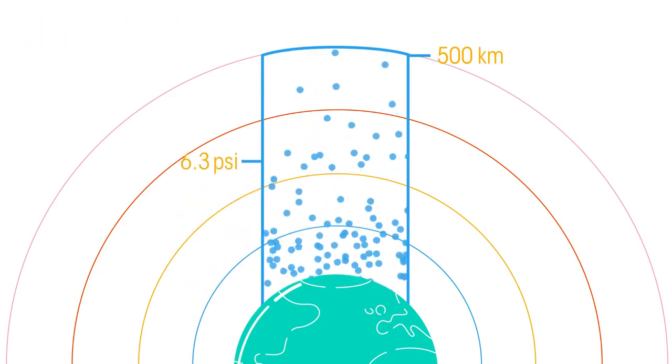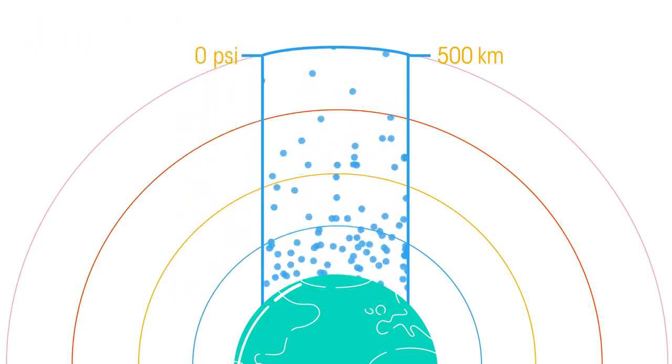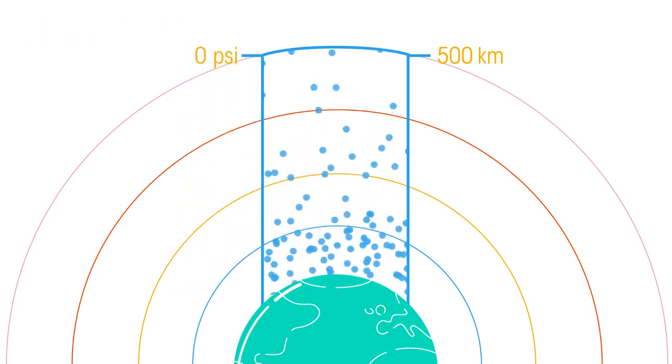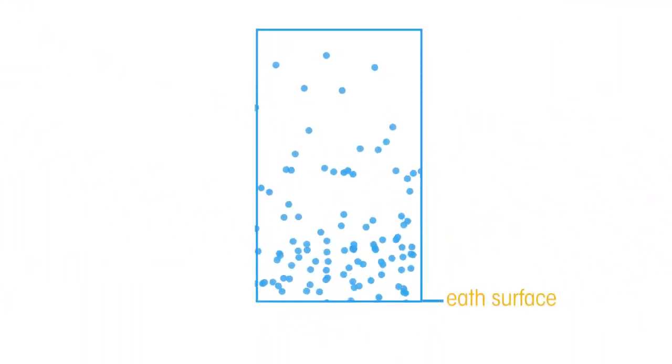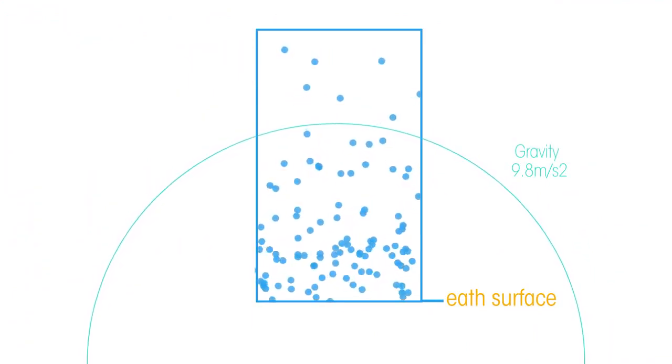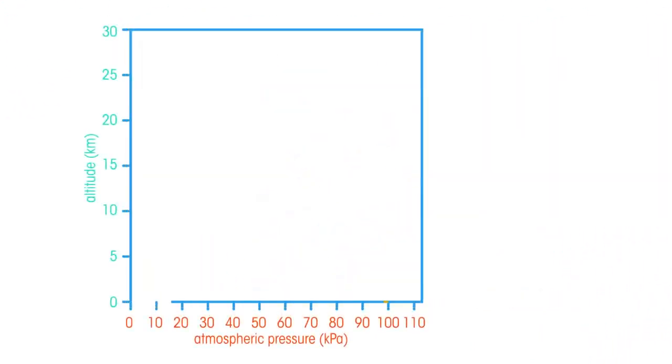So air pressure decreases as we increase altitude until we get to the edge of the atmosphere where there is no more air and so there is no pressure. Most of the atmosphere's molecules are close to the Earth's surface thanks to gravity, and so the air pressure decreases rapidly at first as we increase altitude, and then more slowly at higher levels.